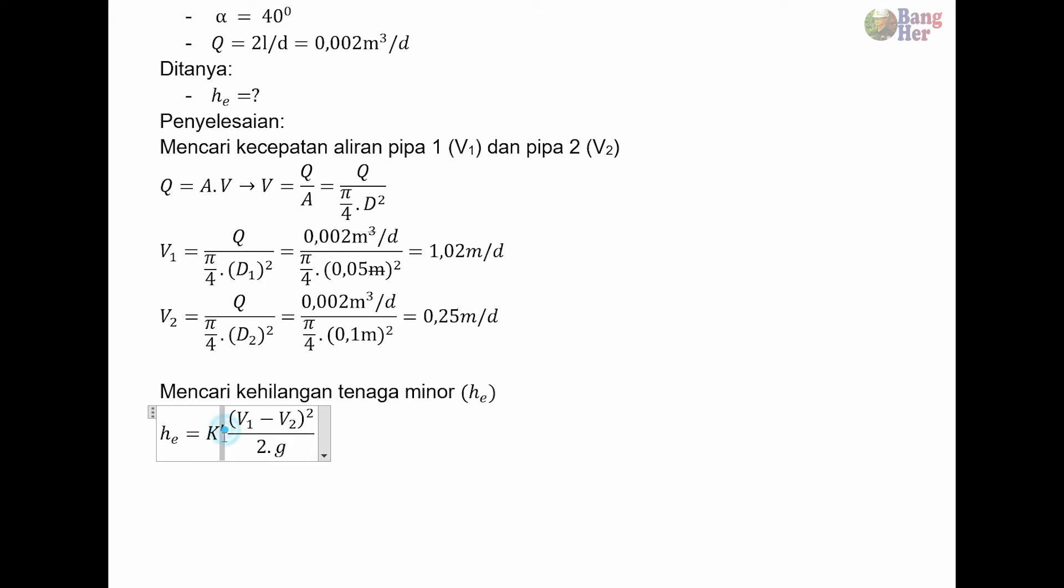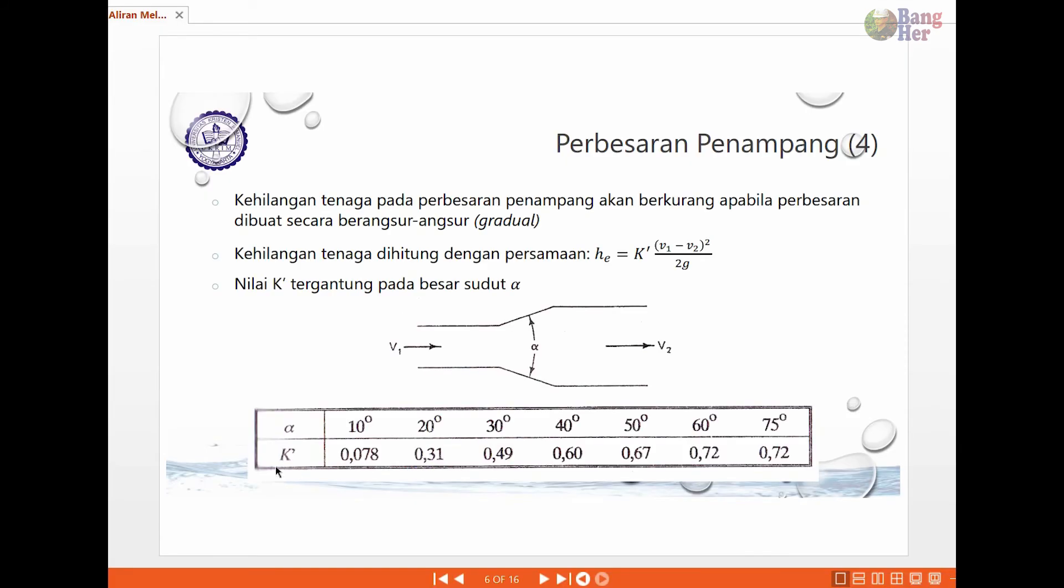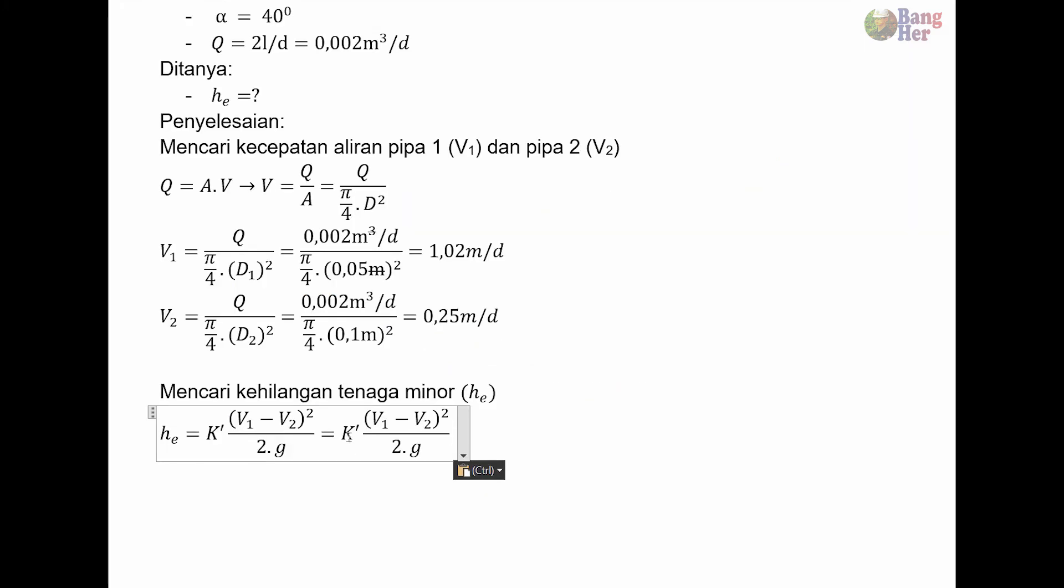K ini adalah suatu koefisien. V1 adalah kecepatan pengaliran di pipa 1, V2 kecepatan pengaliran di pipa 2, G adalah percepatan gravitasi. Untuk memperoleh K ekspansi, perhatikan tabel berikut. Kalau kita lihat pada tabel ini ada alfa dan ada K ekspansi. Alfa itu adalah sudutnya tadi. Pada soal sudutnya adalah 40 derajat. Sehingga K ekspansinya adalah 0,6.